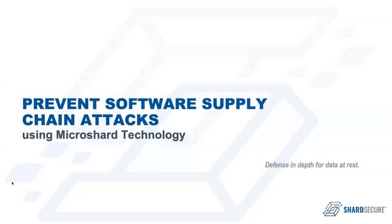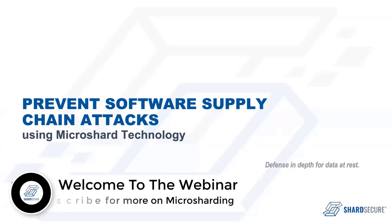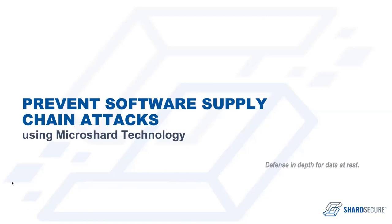The surge of recent software supply chain attacks has put a new focus on securing the software development lifecycle. A software supply chain attack occurs when malicious actors access source code to inject malware or other mechanisms that enable unauthorized access and persistence inside yours or your customers' environments. Your source code can also expose encryption keys and access credentials that can arm an attacker with the tools they need to inflict a potentially massive data breach.